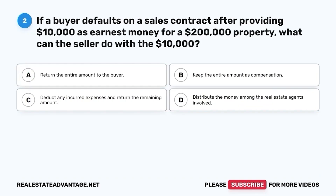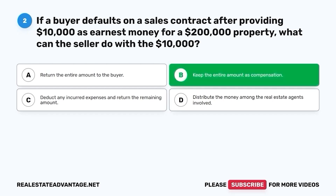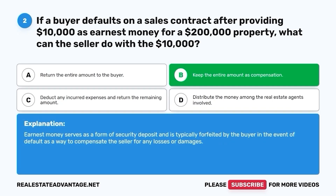Question 2. If a buyer defaults on a sales contract after providing $10,000 as earnest money for a $200,000 property, what can the seller do with the $10,000? A. Return the entire amount to the buyer. B. Keep the entire amount as compensation. C. Deduct any incurred expenses and return the remaining amount. D. Distribute the money among the real estate agents involved. The correct answer is B. Earnest money serves as a form of security deposit and is typically forfeited by the buyer in the event of default as a way to compensate the seller for any losses or damages.